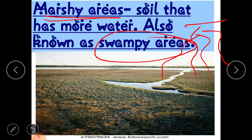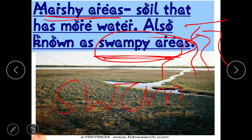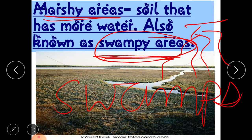Marshy areas are also known as swampy areas — we can call them swamps. Let's discuss the features of the plants or trees found in marshy areas.